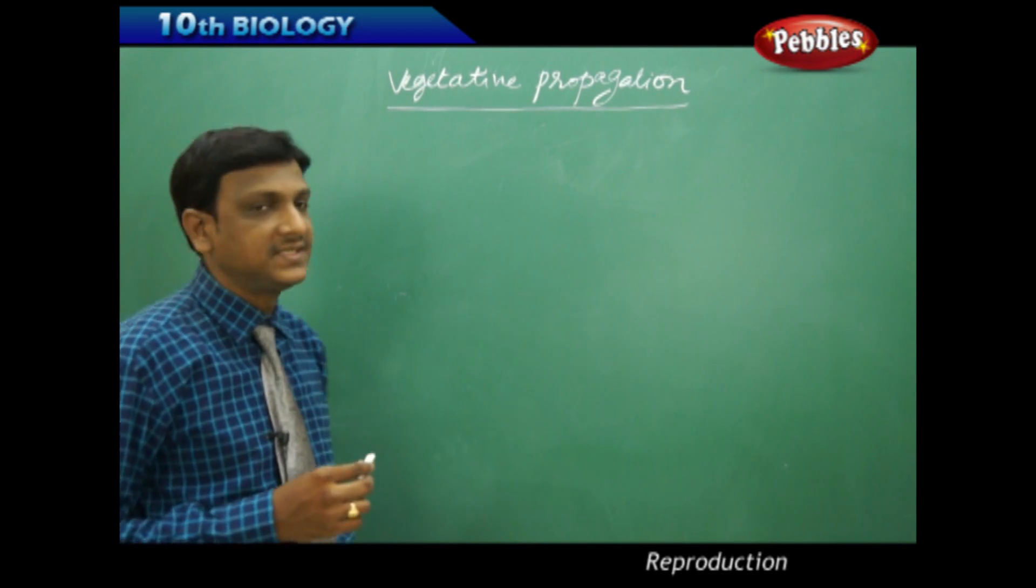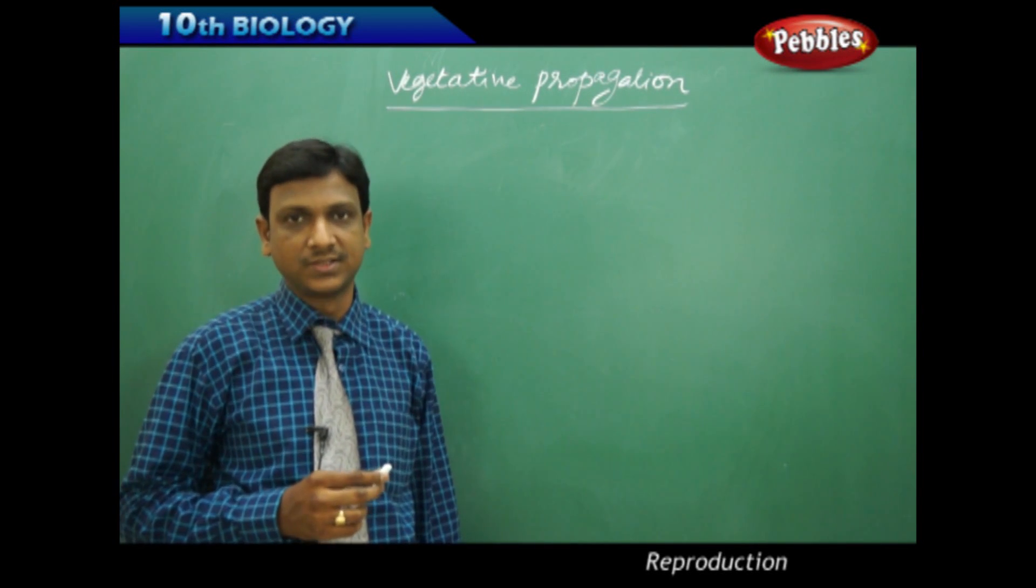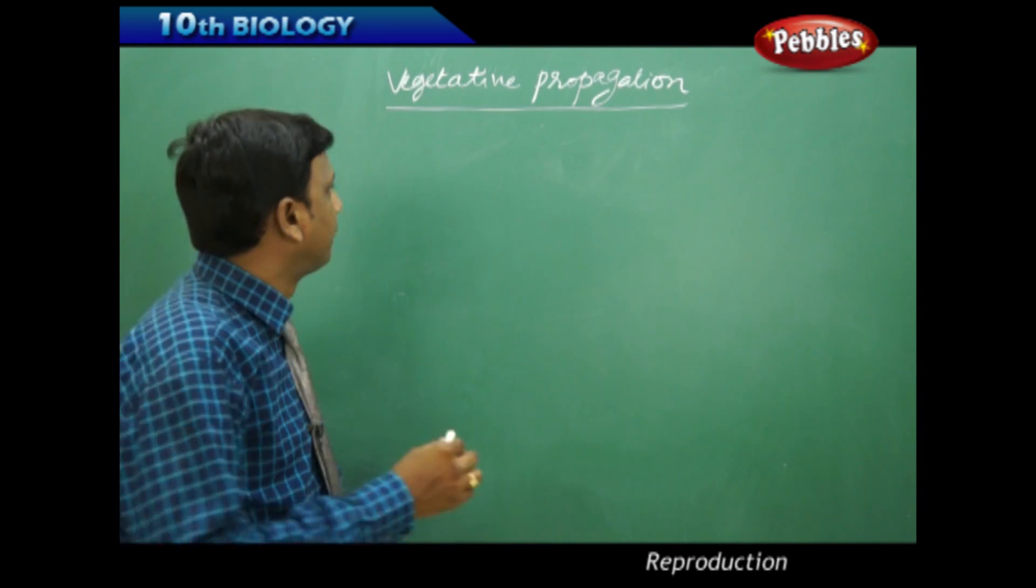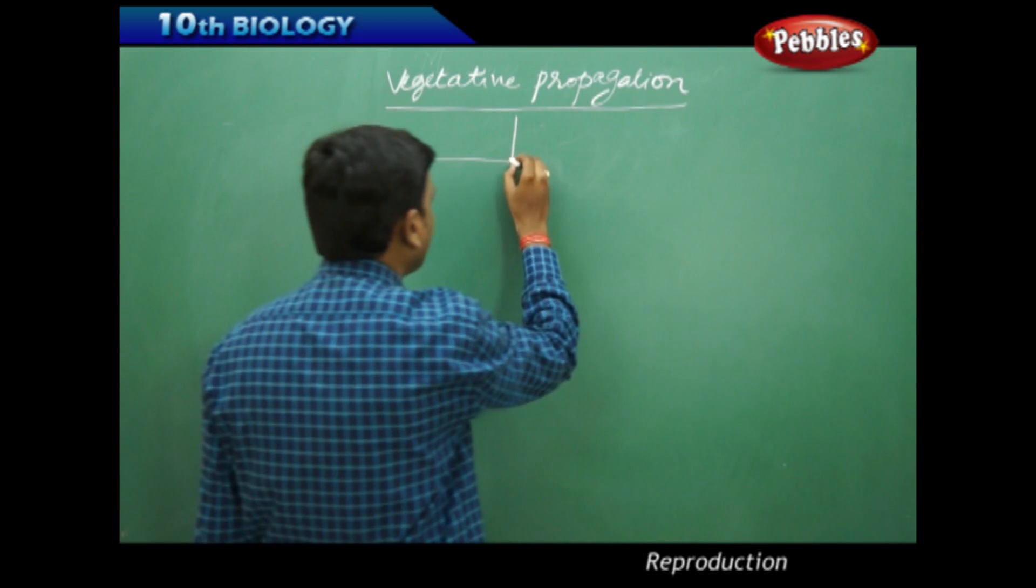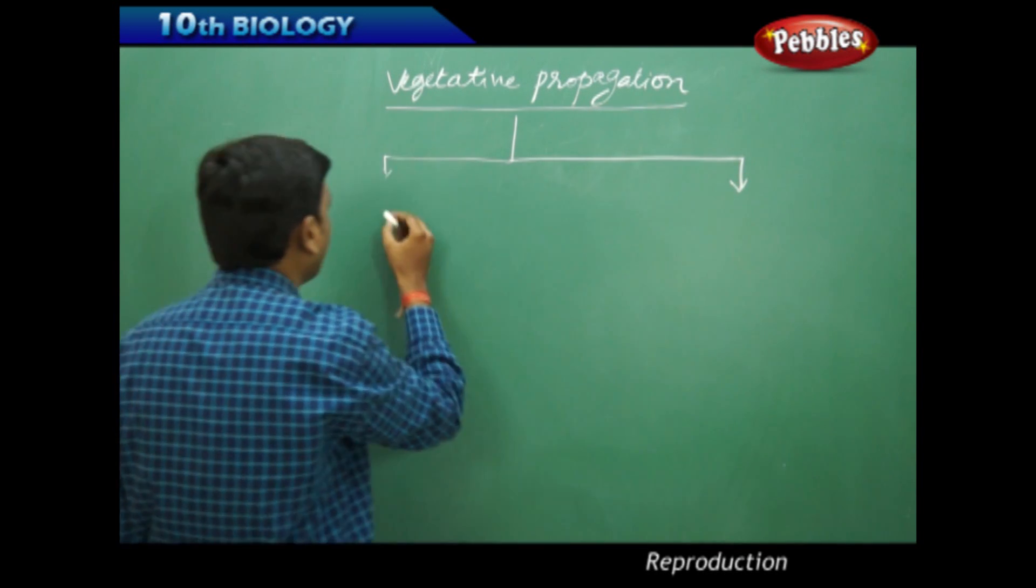Now we are going to discuss vegetative propagation in plants. This is a mode of asexual reproduction that is observed in plants. It is classified into two major types.